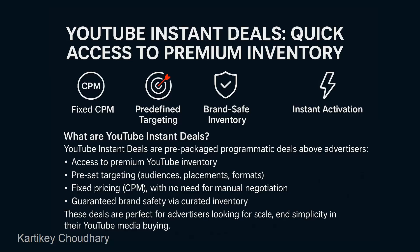YouTube Instant Deals give you quick access to premium inventory because this is a premium slot buy. Whatever inventory is available, the key USP is a fixed CPM. Once you create a deal, a CPM will be shown based on the kind of targeting or the campaign period. For example, if you are running it for one week — whether that is a promo period or not — it will define your fixed CPM, and that CPM remains fixed.